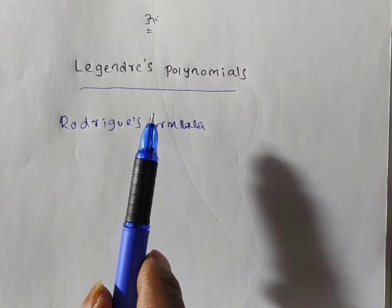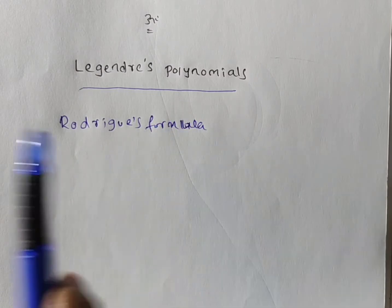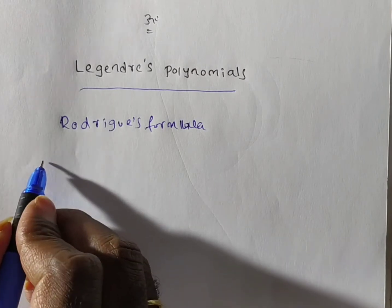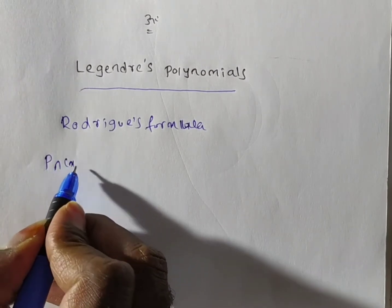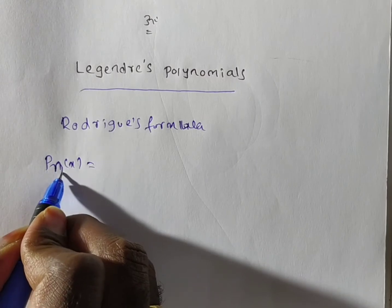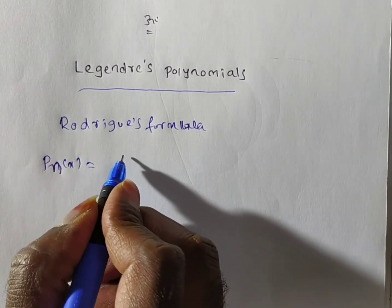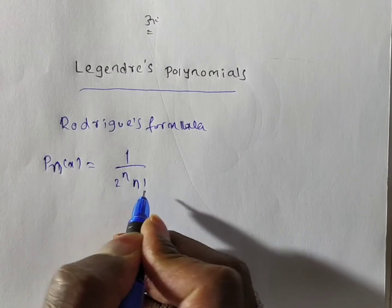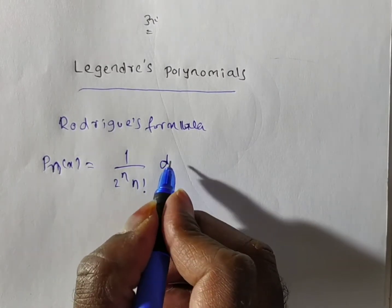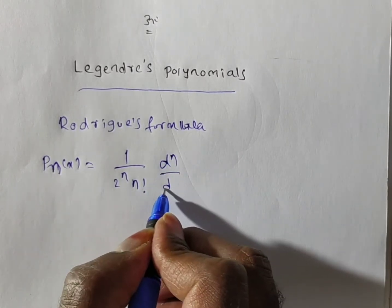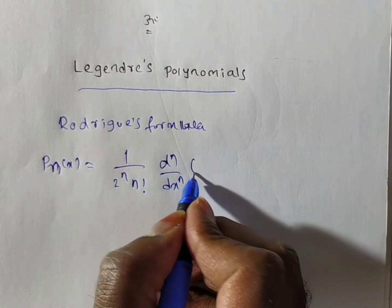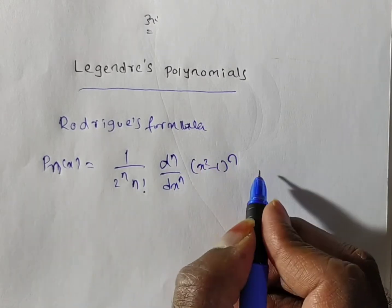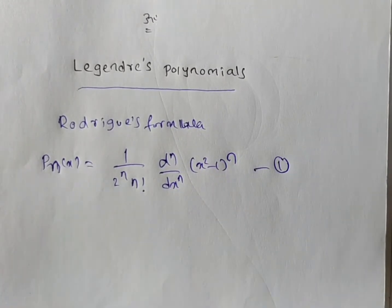Legendre polynomials can be obtained from the Rodrigues' formula. The Rodrigues' formula states that Pn(x) is equal to 1 divided by 2 to the power n, into n factorial, into d to the power n by dx to the power n, times of (x squared minus 1) whole to the power n.